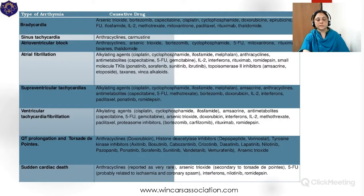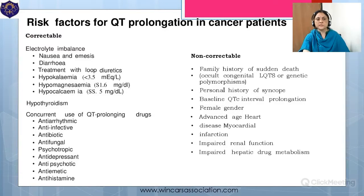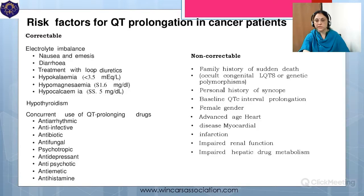Sudden cardiac death, QT prolongation, and ventricular tachycardia are all seen in acute cardiotoxicity with alkylating agents as well as anthracyclines. Risk factors for QT prolongation include electrolyte imbalance, hypothyroidism, use of other QT-prolonging drugs such as antibiotics, antidepressants, antihistamines, and antiemetics. Non-correctable risk factors include a family history of sudden death, history of syncope, advanced heart disease, myocardial infarction, and impaired renal function.